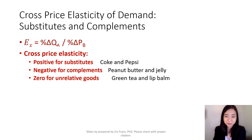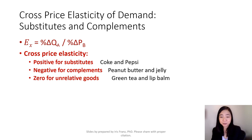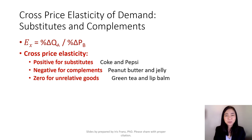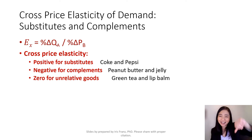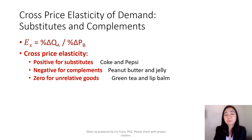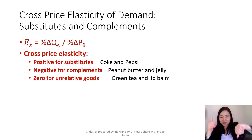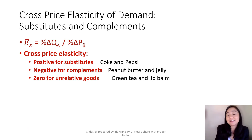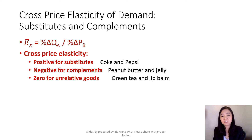Moving on to complements. Suppose you consume peanut butter and jelly together and the price of peanut butter goes up. So you don't buy peanut butter anymore, and you also buy less jelly. You can see the price of peanut butter and the quantity of jelly you purchased are going in the opposite direction, and therefore you get a negative number for the cross price elasticity of demand.